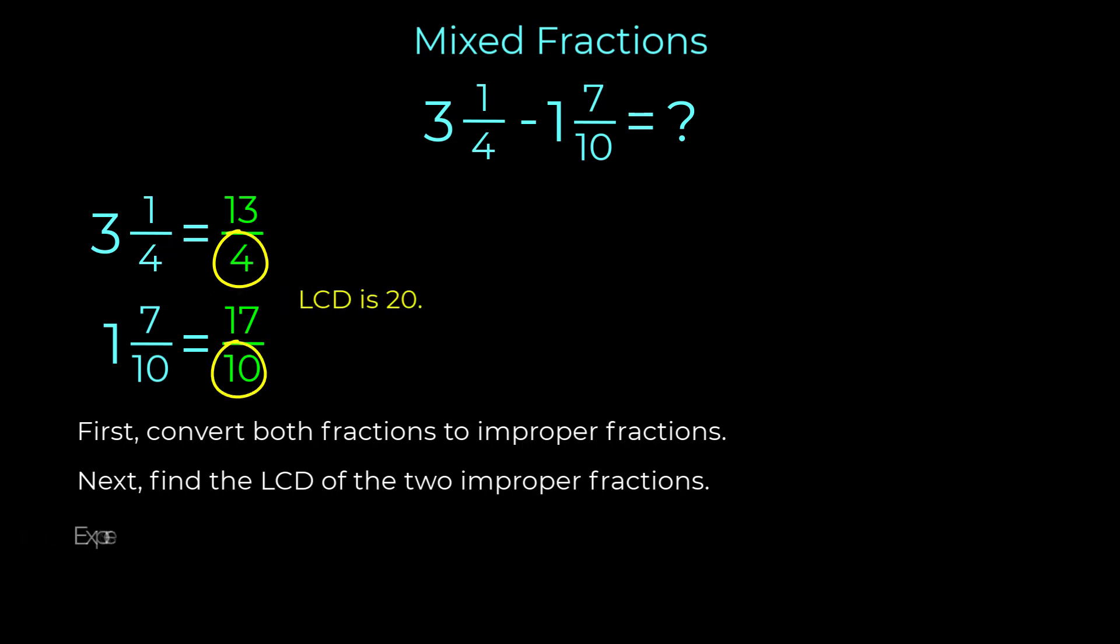Step three is to express the fractions as equivalent fractions using the least common denominator. In order to express thirteen over four as an equivalent fraction with twenty as the denominator, we multiply both the numerator and denominator by five.